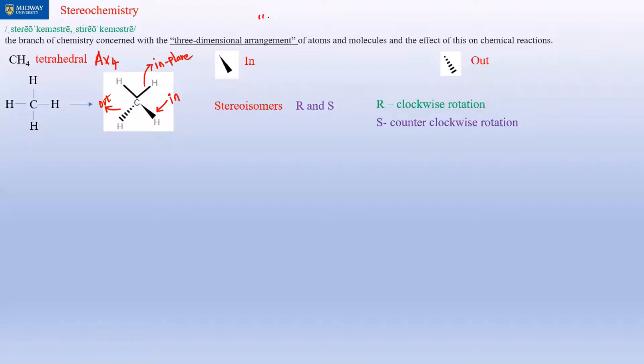R means clockwise rotation, S means counterclockwise. There's an instrument called a polarimeter—when you have an organic molecule dissolved in a liquid and it's put into this instrument, it shines light on the molecule. If the light rotates clockwise, the molecule has an R configuration. If the light rotates counterclockwise, the molecule has an S configuration.